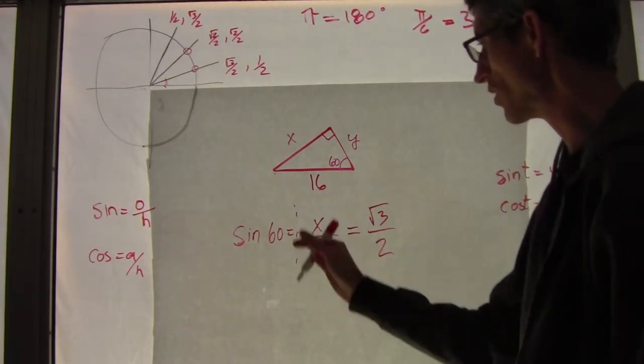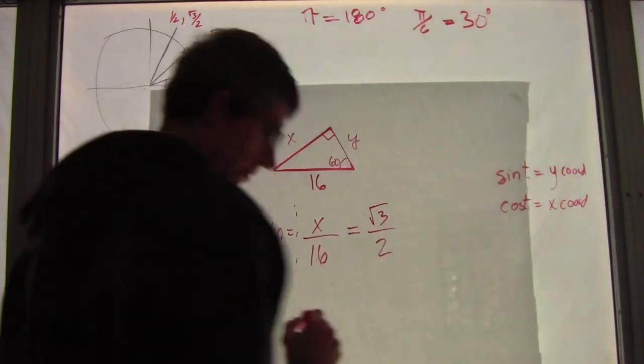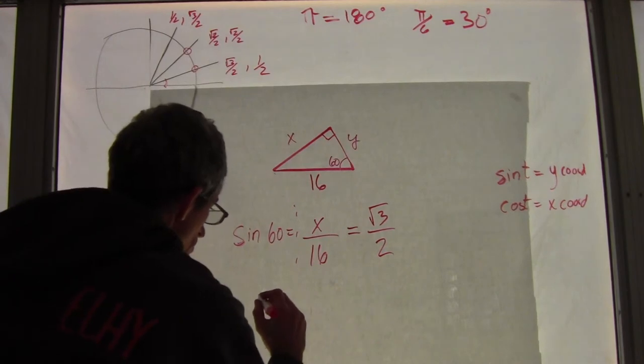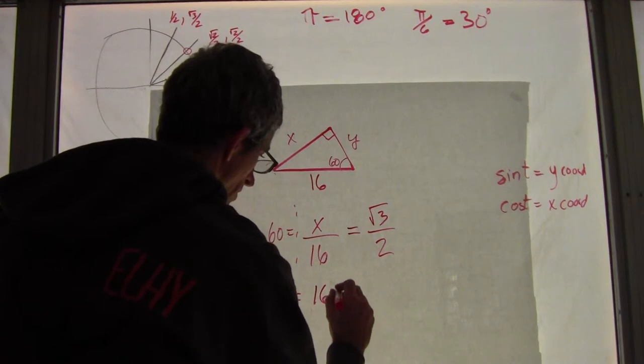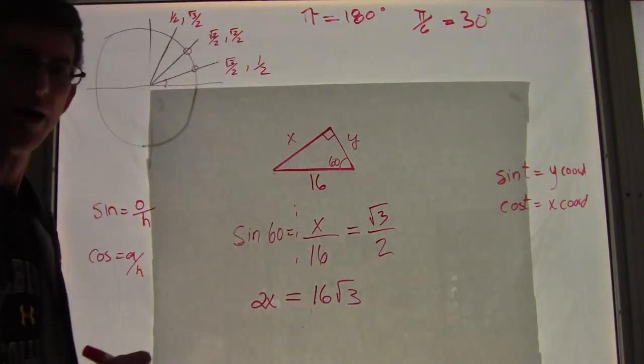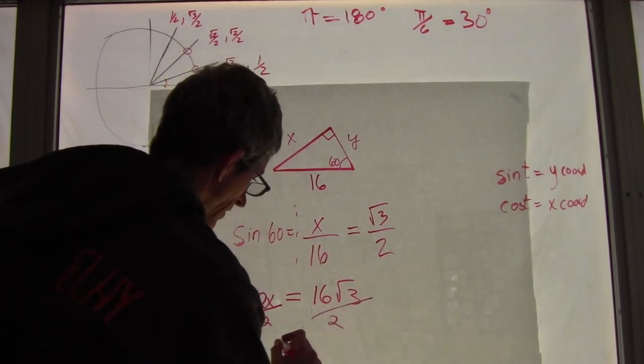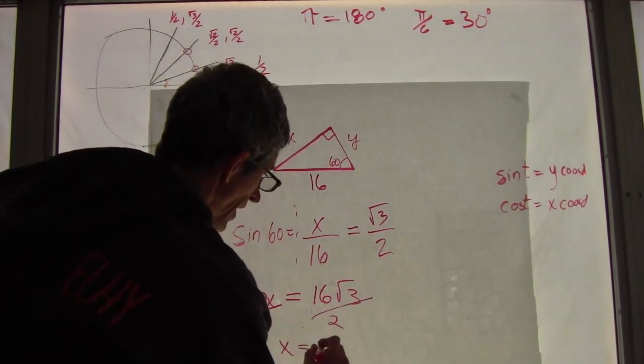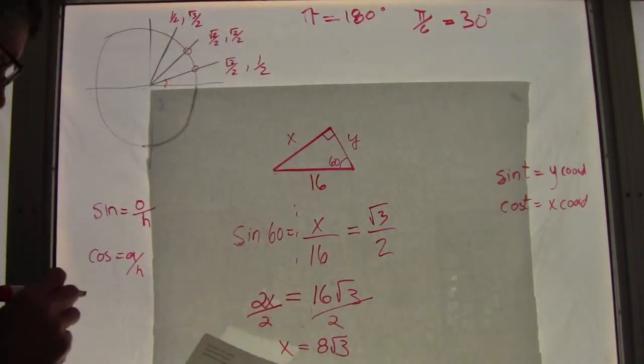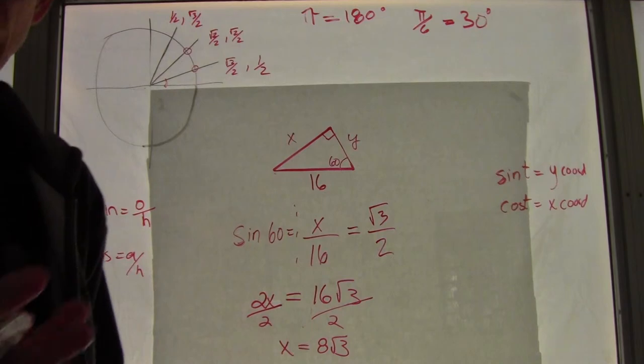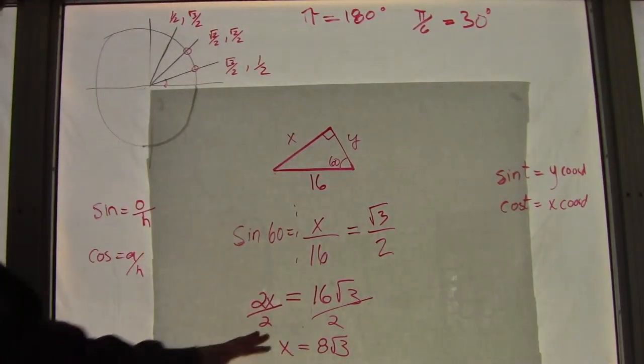So the simplest way is to cross multiply. So x times the 2 is going to be, write that down here, it's going to be 2x. And then the 16 times the square root of 3. 16 times the square root of 3. And then I'm going to divide both sides by 2. And I'm going to find x equals 8 times the square root of 3. And now I know what x is.